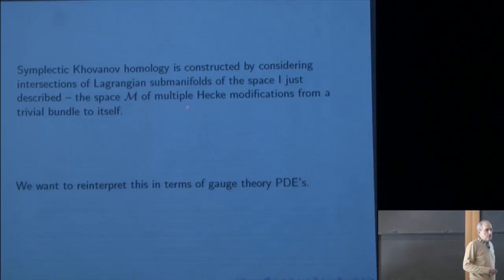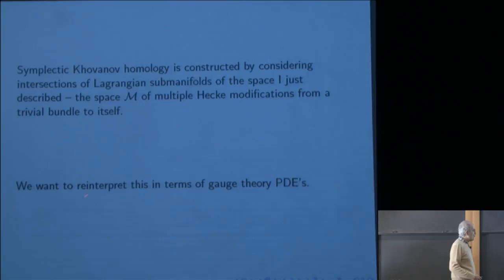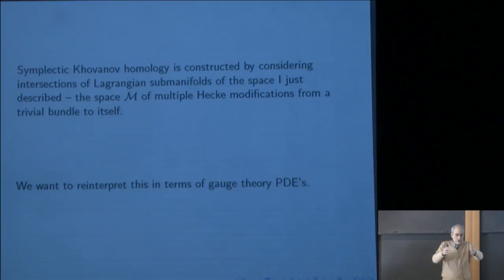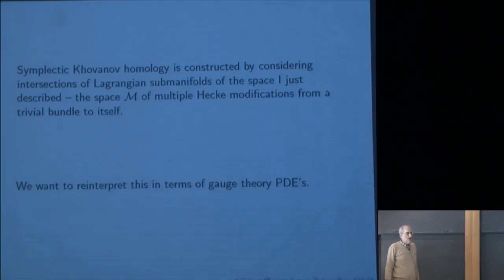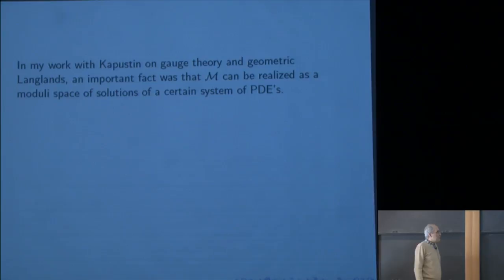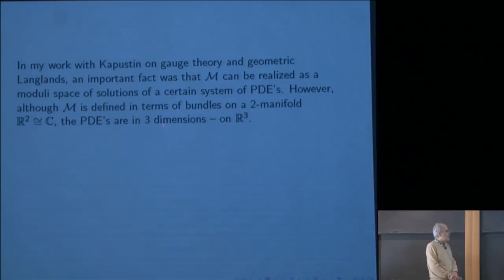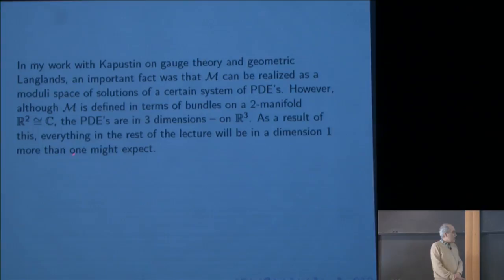We want to reinterpret this space in terms of partial differential equations of gauge theory, because what this space is supposed to be is what we get from some set of PDEs if we stretch in one direction. So we have to describe it in terms of gauge theory PDEs, and then we'll work backwards and get gauge theory PDEs for the unstretched problem. In my work with Kapustin on gauge theory and geometric Langlands, an important fact was that this M is a moduli space of solutions of a certain set of elliptic PDEs. Although M is defined in terms of bundles on a two-manifold, the PDEs are in three dimensions on R^3. As a result, everything in the rest of the lecture will be in a dimension one more than you might expect.